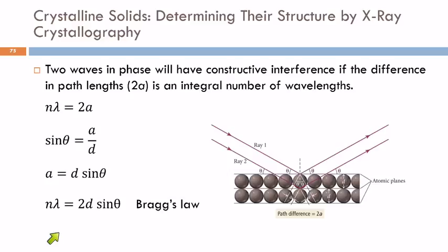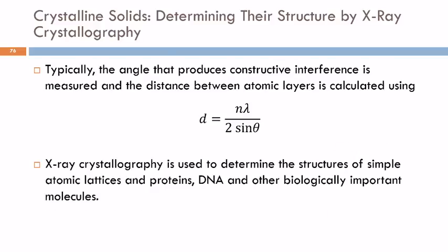And then you can calculate that distance using Bragg's law. So n is the integer times the wavelength of the x-rays, and that's going to equal 2d sin θ. And so that's how they figure it out. So usually what we do is we measure the angle and then we calculate the distance. And so rearranging it gives us this.